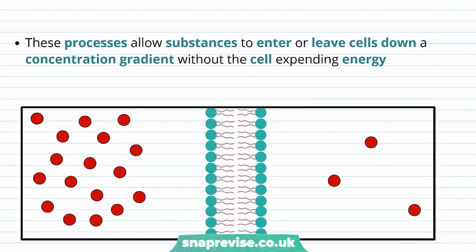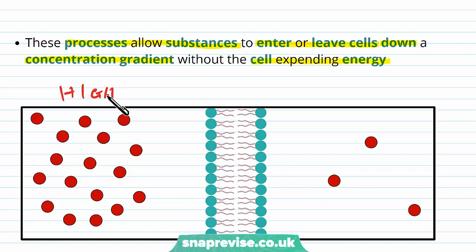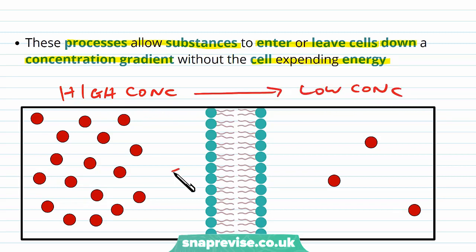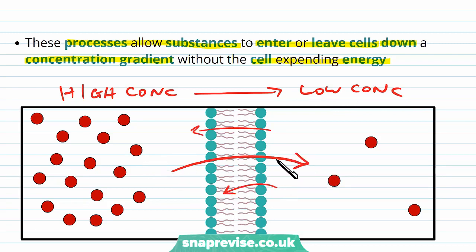These processes basically allow substances to enter or leave a cell down a concentration gradient. And because they're going down a concentration gradient, the cell doesn't need to expend any energy. They've gone from an area of high concentration to an area of low concentration, and the net movement is from high to low. This is all passive, so there's no need to spend any energy or use ATP.